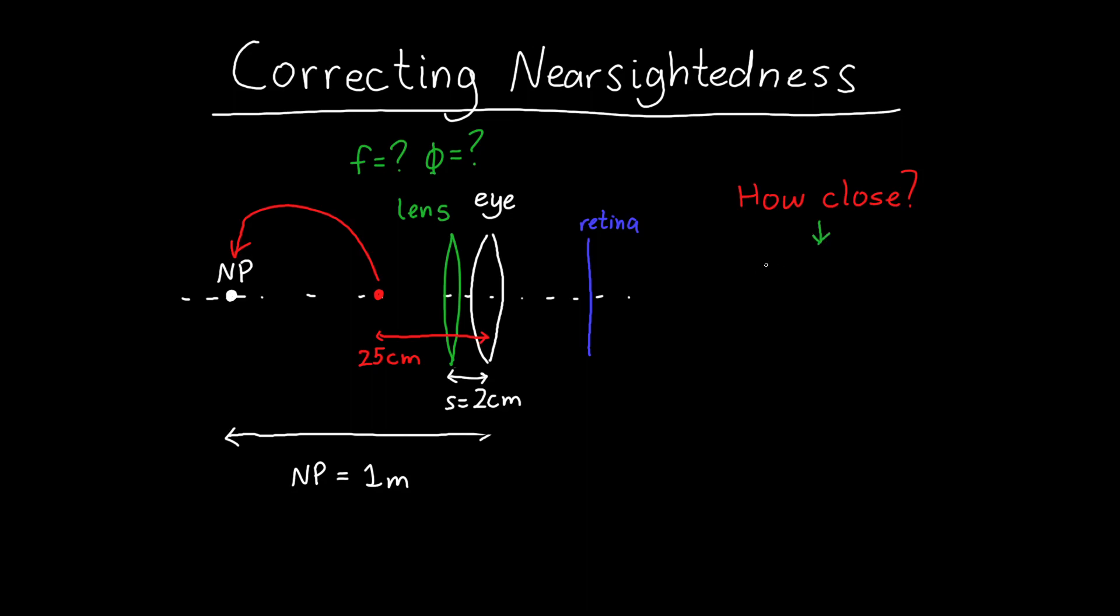And how do we do that? Well, we can do that with a lens, a lens can take an object. And so here, this will be our object distance, which we'll call do and image it. So make it appear as if it's at this location. So this will be our image distance. So from the corrective lens to the near point.